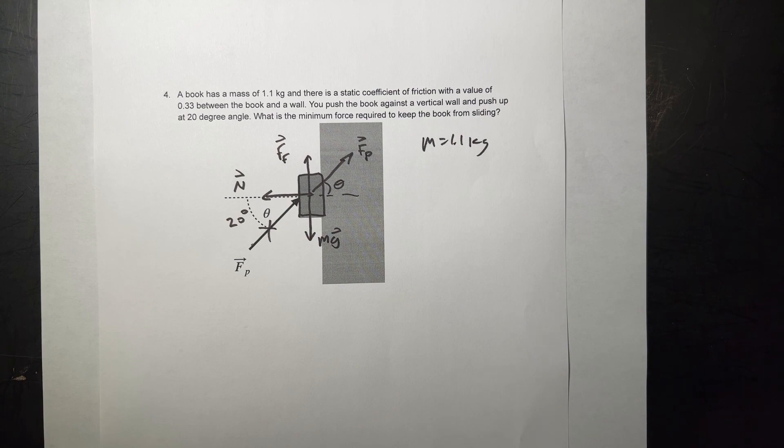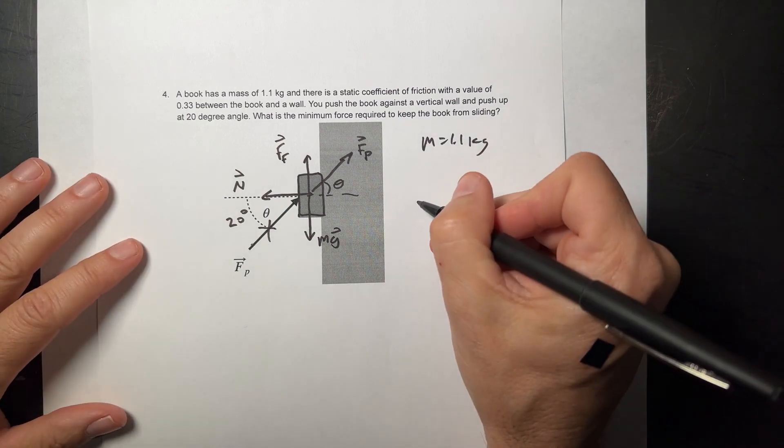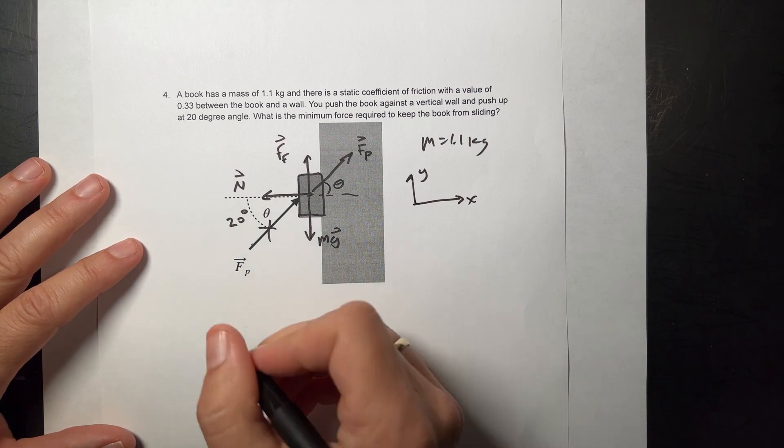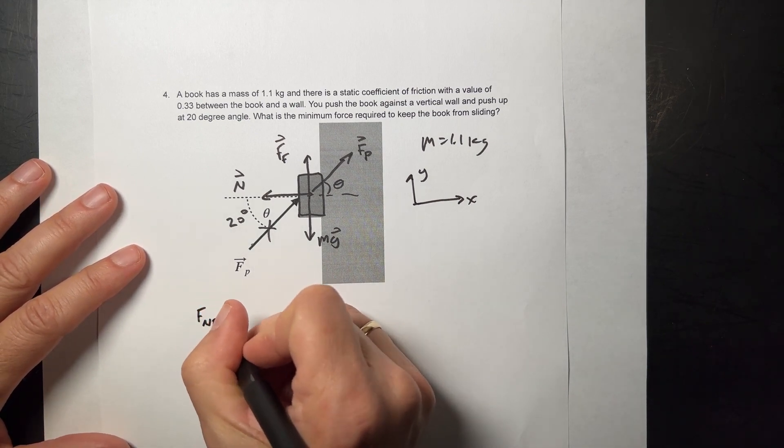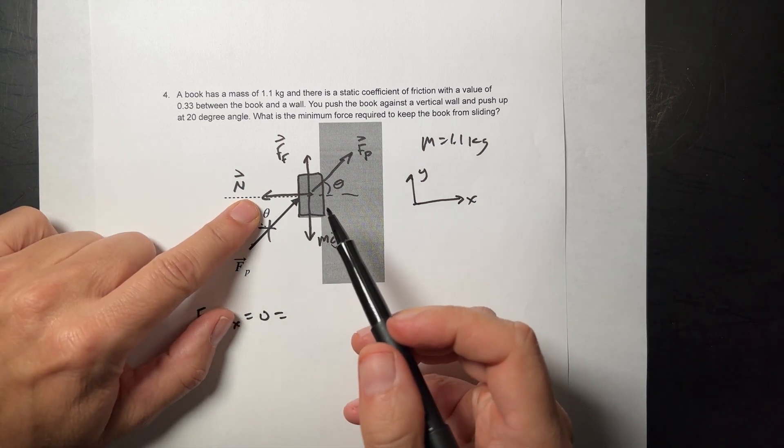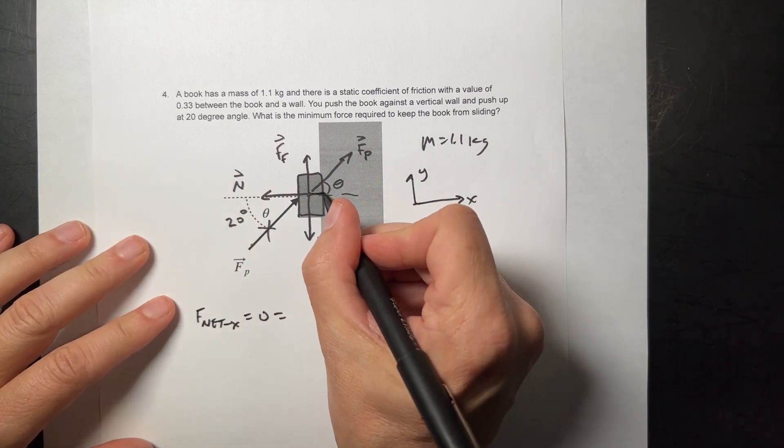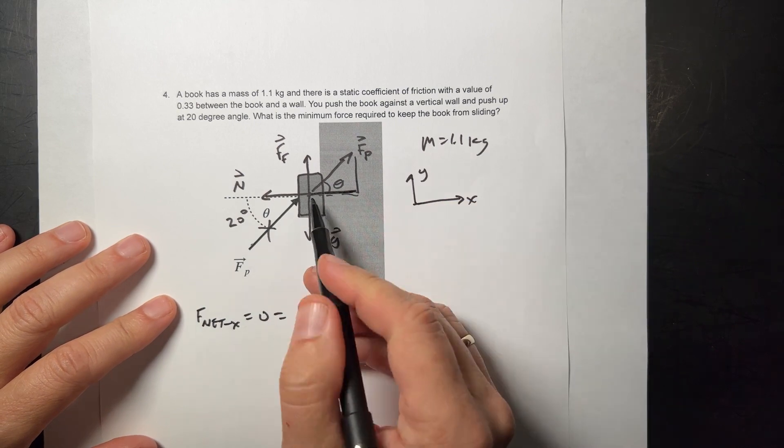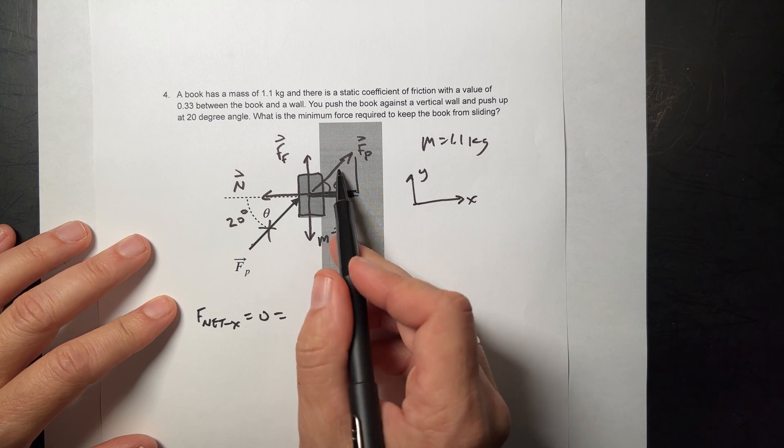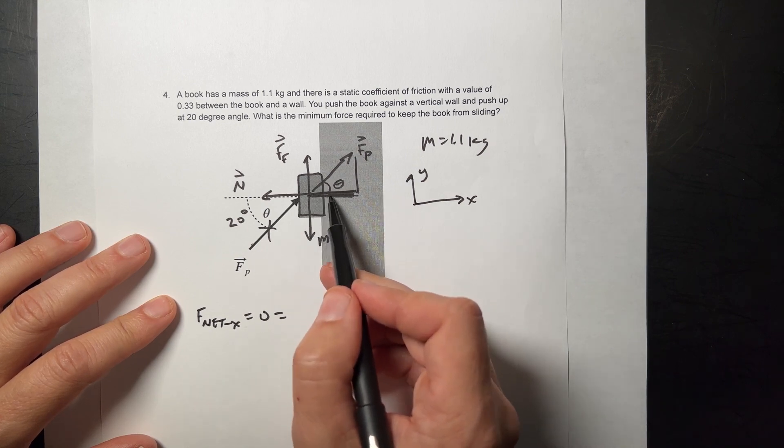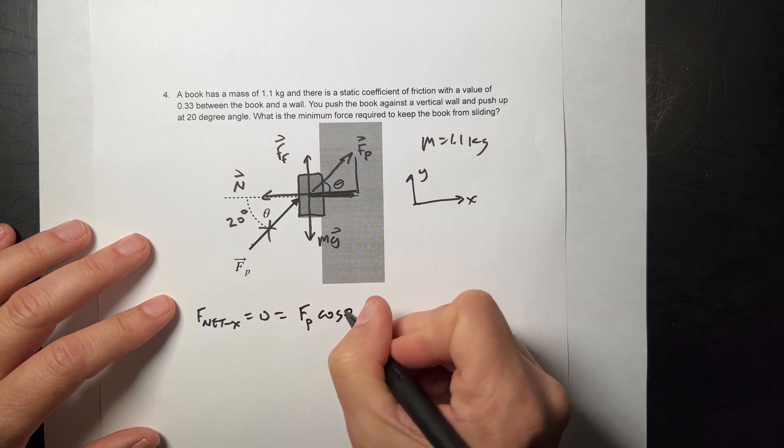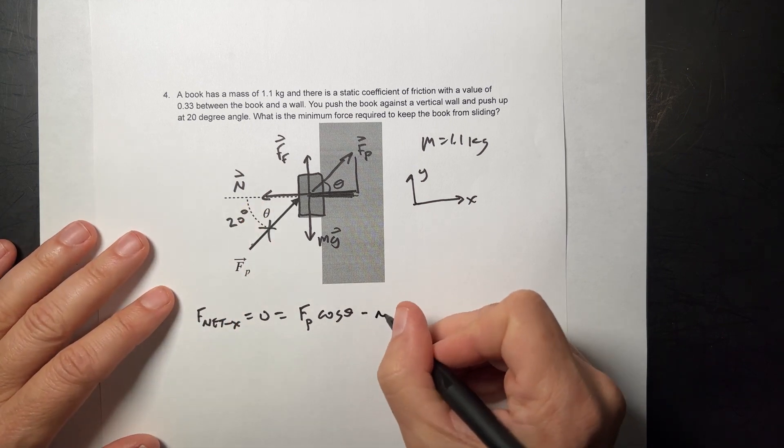So if this is at rest, then the net forces have to be zero. Let's pick this as my x direction, and that is the y. And now we can write F net x and F net y. I'll write them right here. Let's do F net x is equal to zero. So what forces are in the x direction? Well, I have this normal force, and then I have part of the push. So if I look at this, this is the x component of the push force right there. That's in the x direction. And if I have that as my angle, Fp is my hypotenuse, and that's my adjacent side. So I'm going to call this Fp, I don't know the value of that, cosine theta, and then I have the normal force, minus n equals zero.